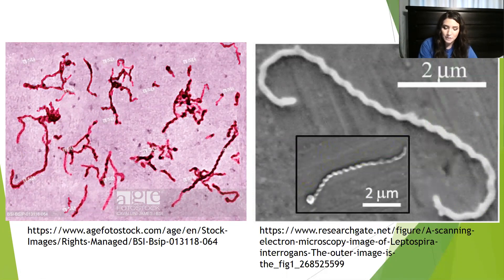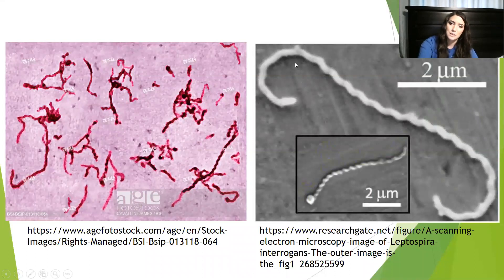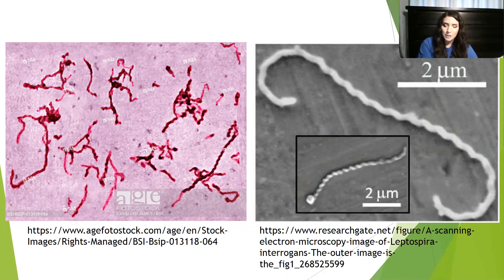Another physical feature of this specific spirochete bacteria is its hooked ends, as you can see in the picture here on the right and then here on the left. Leptospirointerrogens is so thin in diameter that it requires special microscopy, as seen on the right, or dye to be seen, as seen on the left.